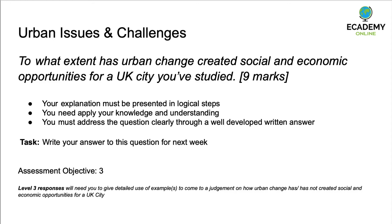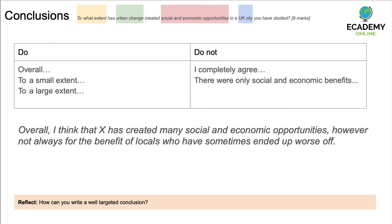Take the time now to go and answer this question yourself. Write it down and do the table if you haven't done it before, using your textbook and complete this question. When you get to your conclusion, make sure you use words like 'overall,' 'to a small extent,' or 'to a large extent' at the beginning. Do not use words such as 'I completely agree with this' or 'there were only social and economic benefits to the regeneration.' A good way to start the paragraph might be: 'Overall, I think that X has created social and economic opportunities. However, not always for the benefit of locals who have sometimes ended up worse off.'